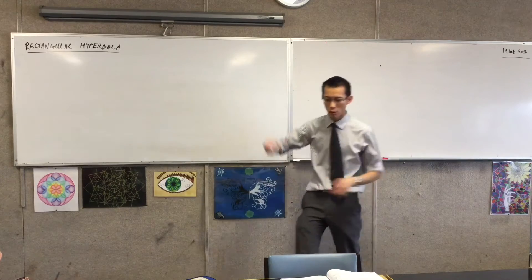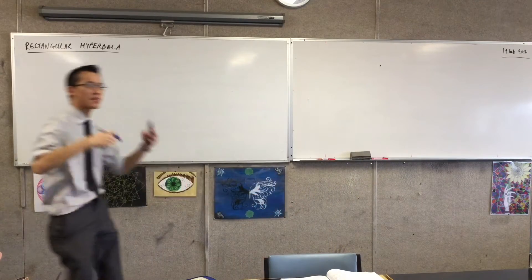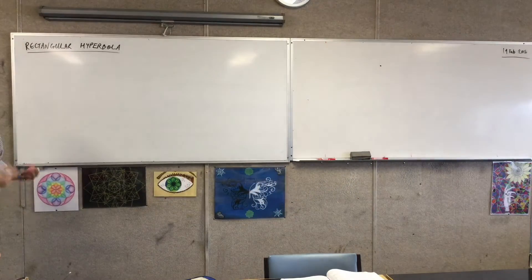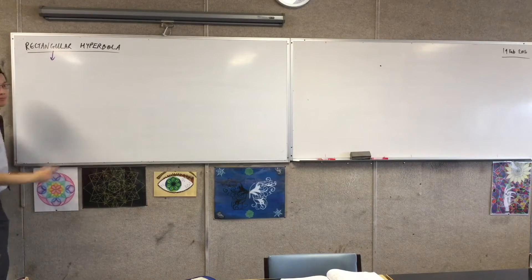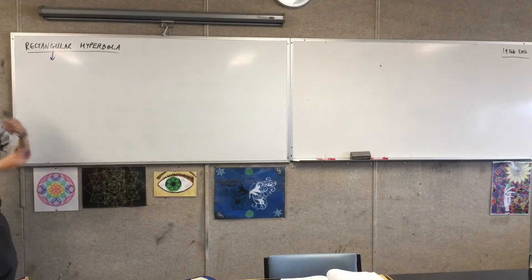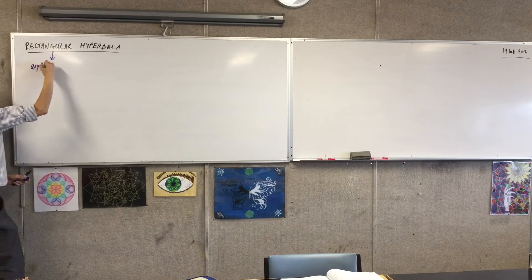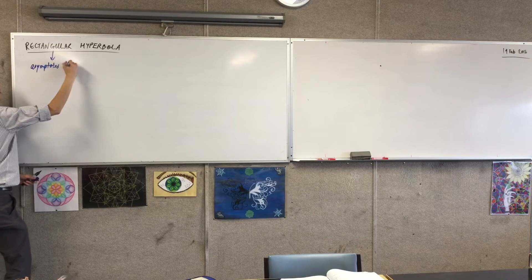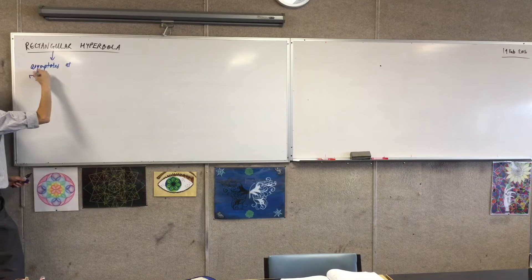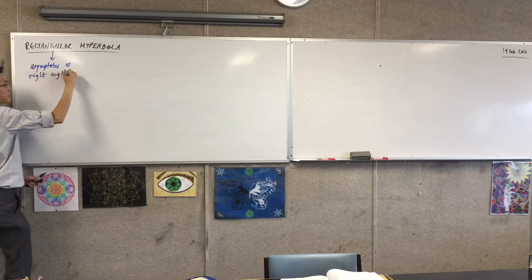Do you recall, what is it that defines, what is it that makes a rectangular hyperbola? Rectangle? The asymptotes are at right angles. In other words, they are rectangular.